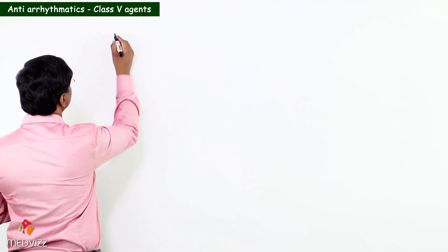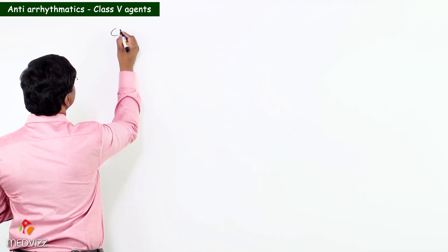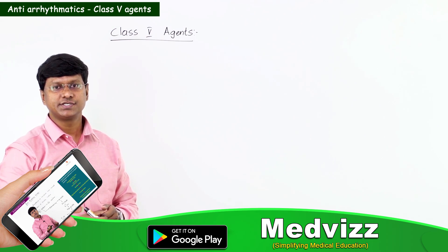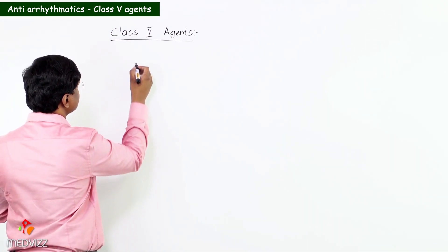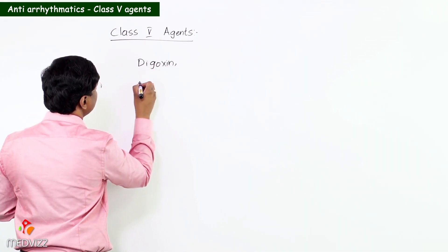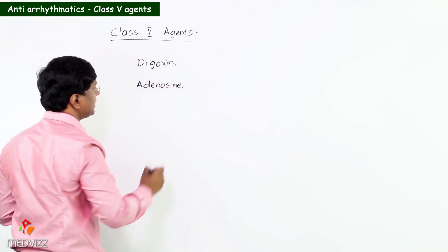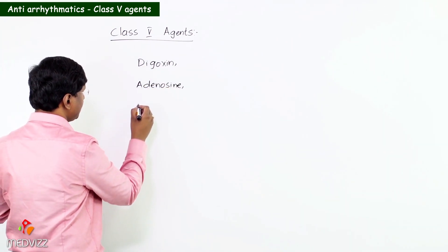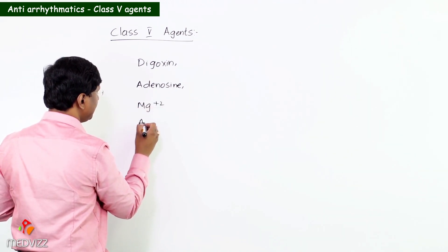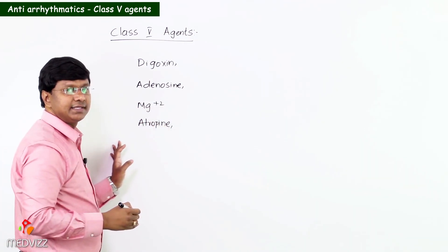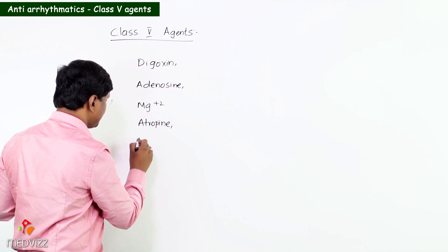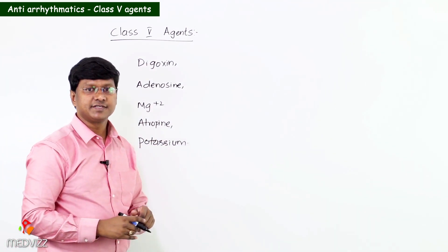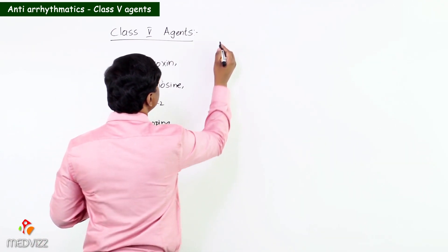Let me discuss the Class 5 agents. The examples include digoxin, adenosine, magnesium, atropine, and potassium.